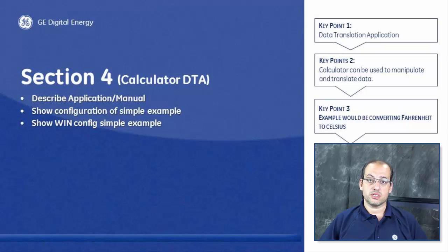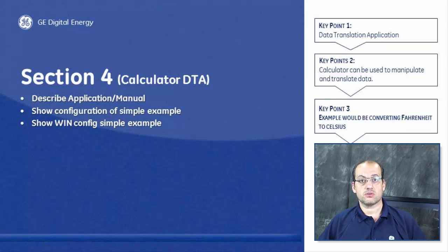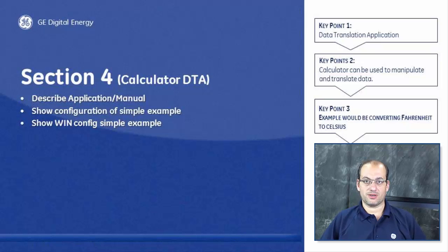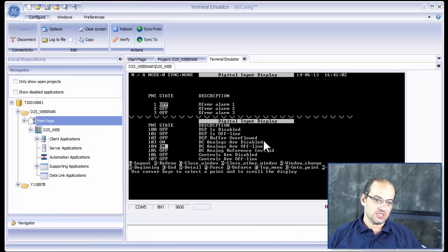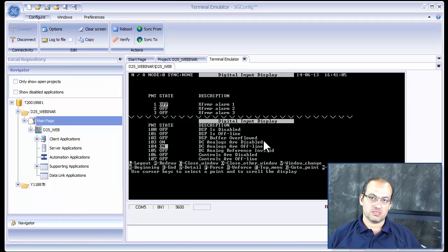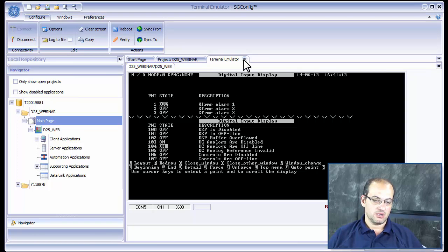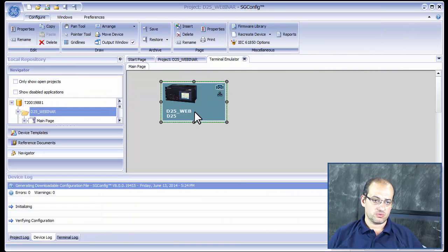In this section I'm going to cover: how to create a digital input and convert it into another digital input; how to create a digital input and convert it into an analog input; how to utilize a digital input to drive a digital output in another application. Toward the end I will summarize. We left off at the terminal emulator — we're going to close it and go back to our D25 device.